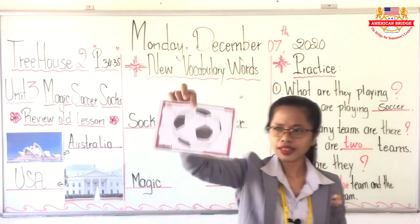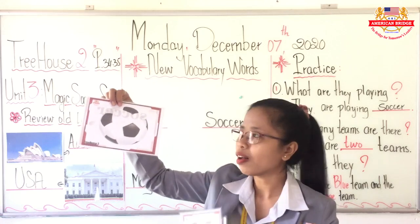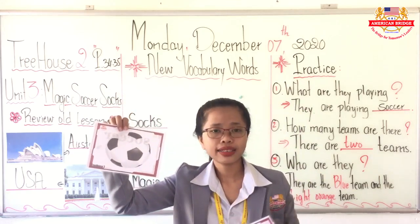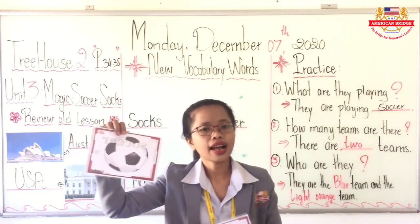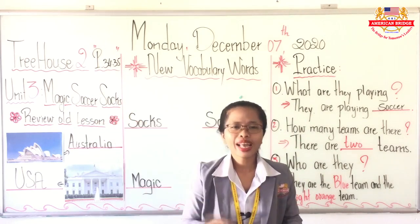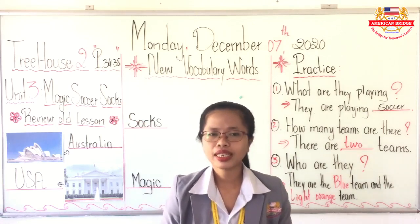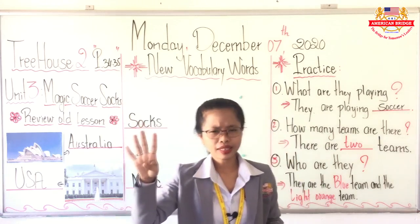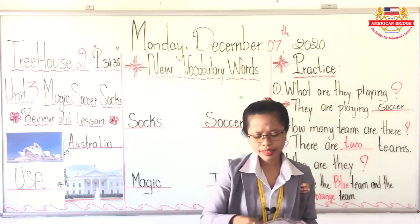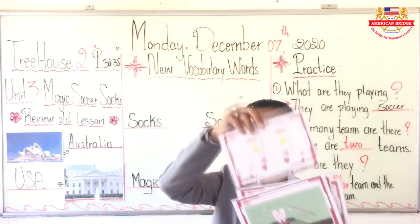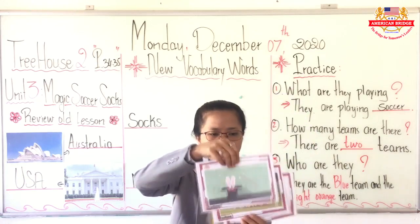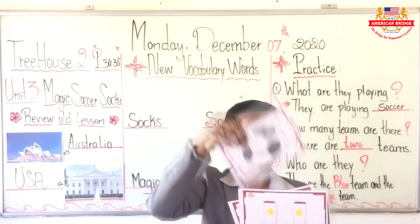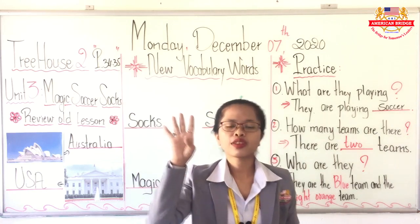And our last picture — wonderful — this one we call soccer. And how can we spell it? S-O-C-C-E-R. Soccer. Who can tell the teacher how many pictures did I show you? Excellent — there are four pictures. And what are they? Socks, magic, team, and soccer.